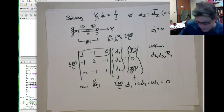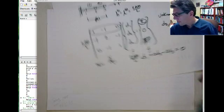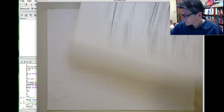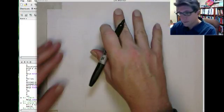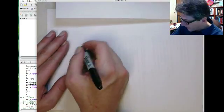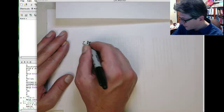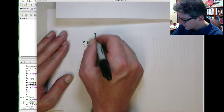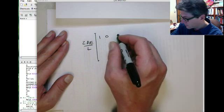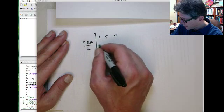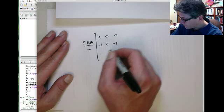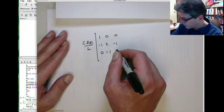So this then gives me the following modified stiffness matrix. So now I get the following system: 2AE on L times [1, 0, 0; -1, 2, -1; 0, -1, 1].